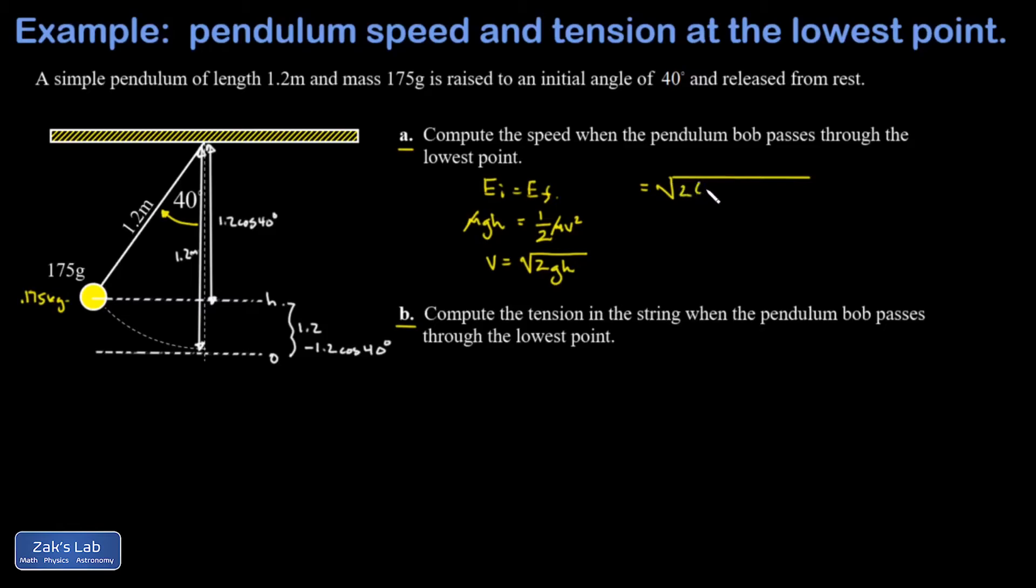And we plug in 9.8 for g, and then 1.2 minus 1.2 cosine 40 is my height. And I can factor the 1.2 out, so 1.2 times the quantity 1 minus cosine 40. And when I run the numbers on this I get 2.35 meters per second.